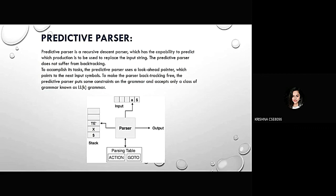Now, the predictive parser. What is predictive parser? Predictive parser is a recursive descent parser which has the capability to predict which production is to be used to replace the input string. The predictive parser does not suffer from backtracking. To make the parser backtracking free, the predictive parser puts some constraints on the grammar and accepts an early-end class of grammar known as LL(1) grammar. The parser will accept the input string stack and parsing table.